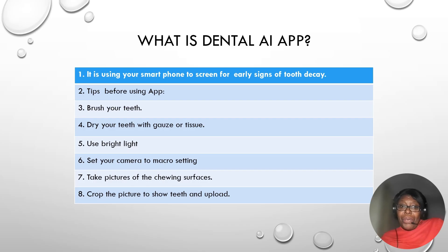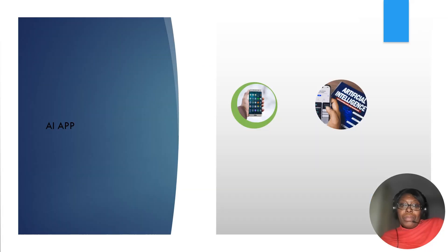Use a bright light or ring light, set your camera to macro setting, take pictures of the chewing surfaces, crop the picture to show the teeth, and upload.